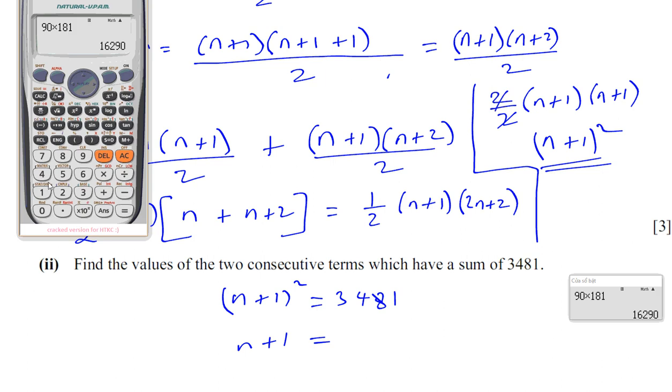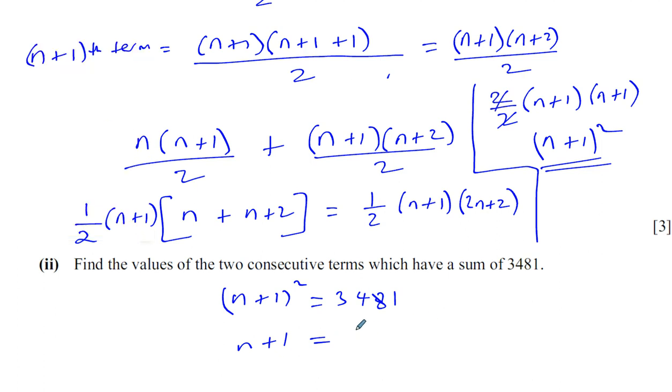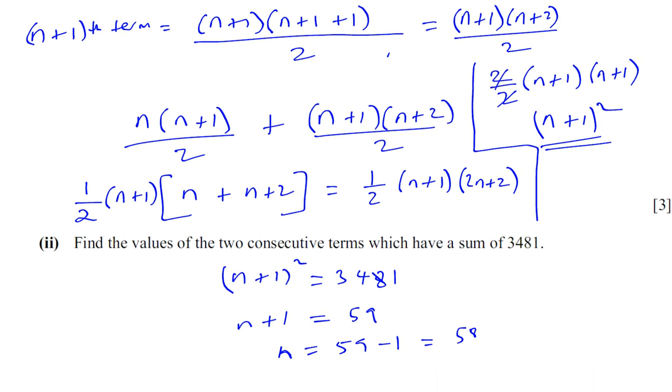We have the square root of 3,481. It's going to end with a 9, I think. So, n+1 equals 59. You can't subtract the 1 until you've got rid of the square. We found the square root of both sides and then, now I can subtract the 1. So, now, n is equal to 59 minus 1, which is 58. So, the 2 consecutive terms must be 58 and 59.